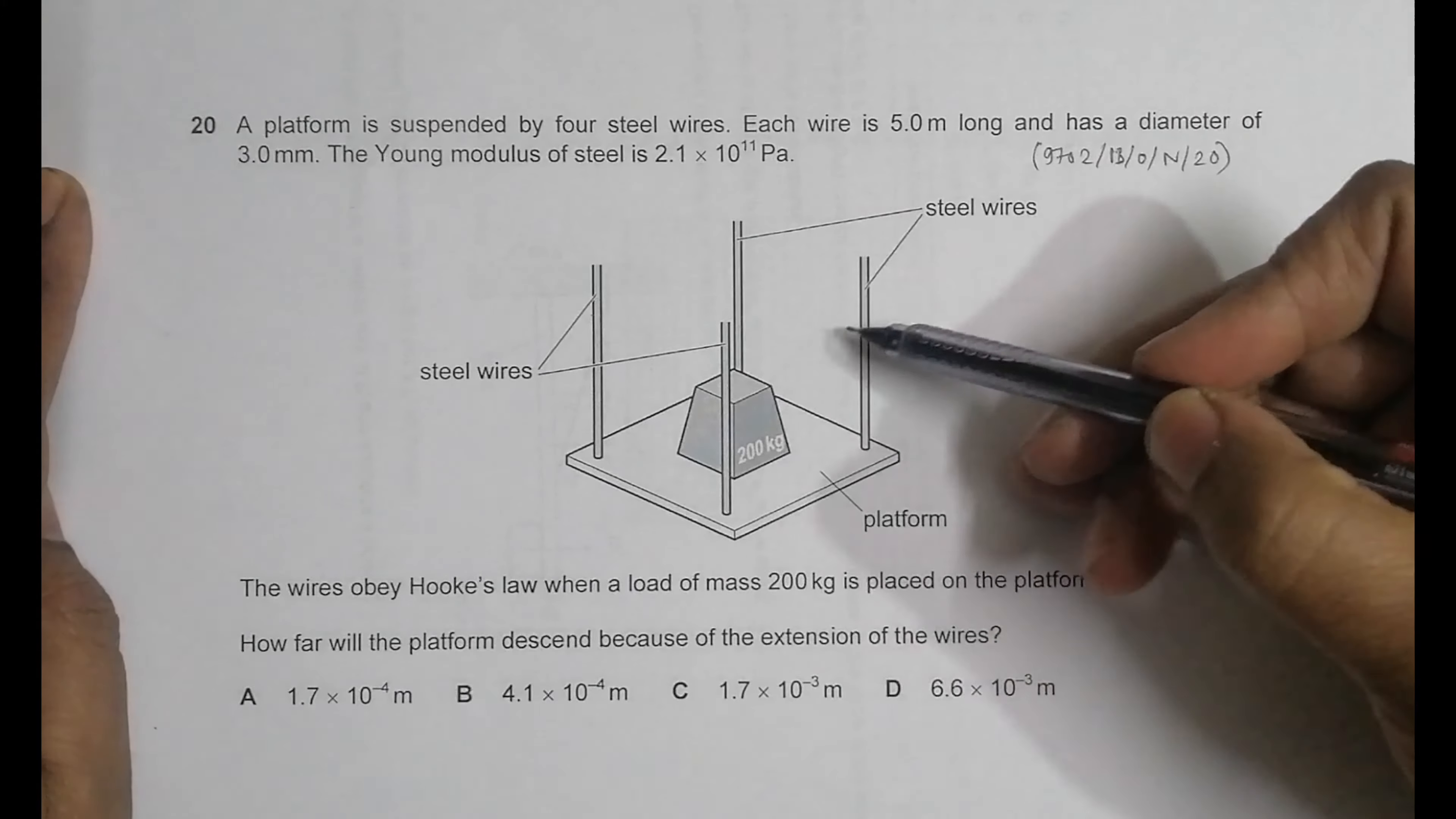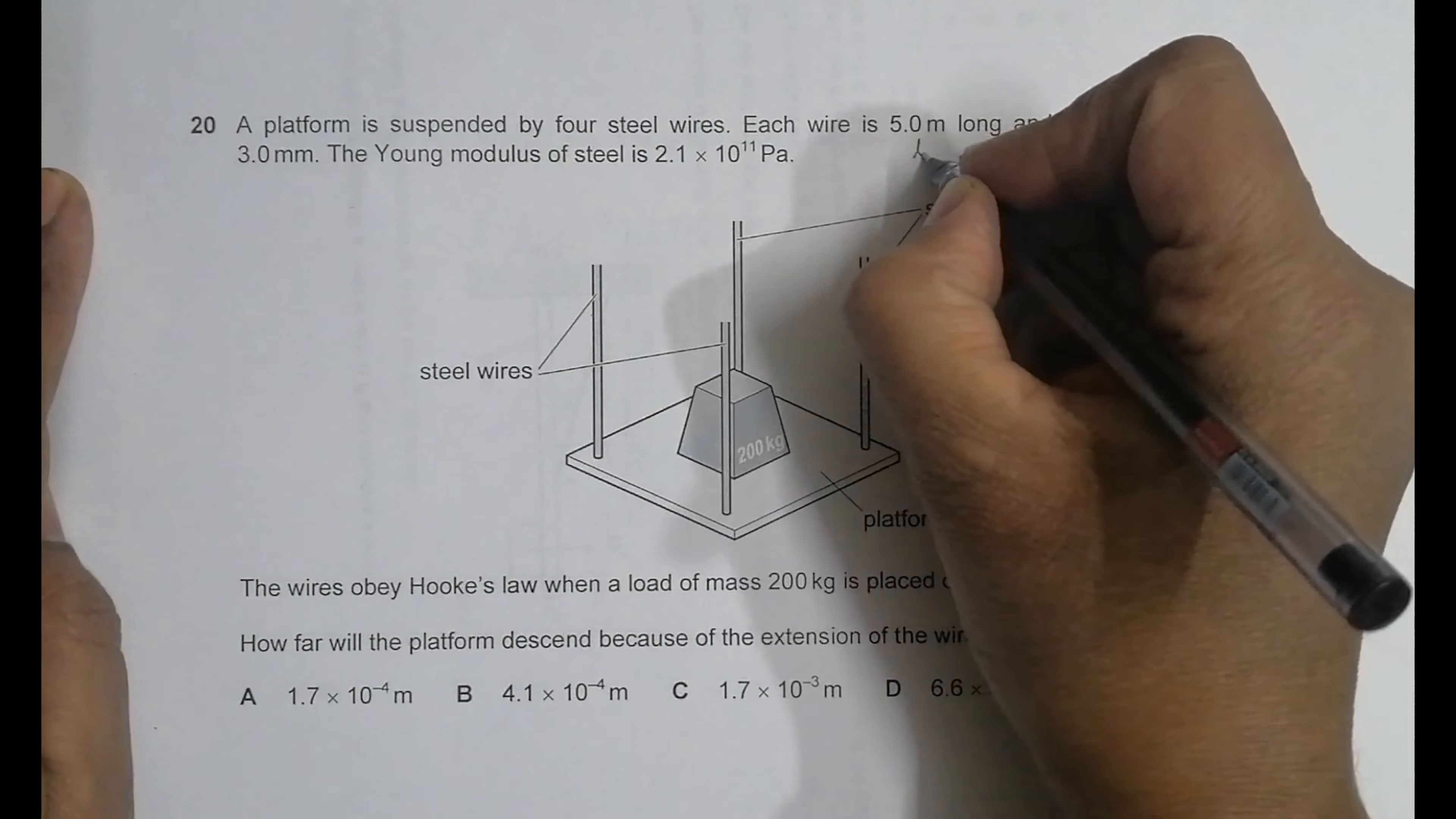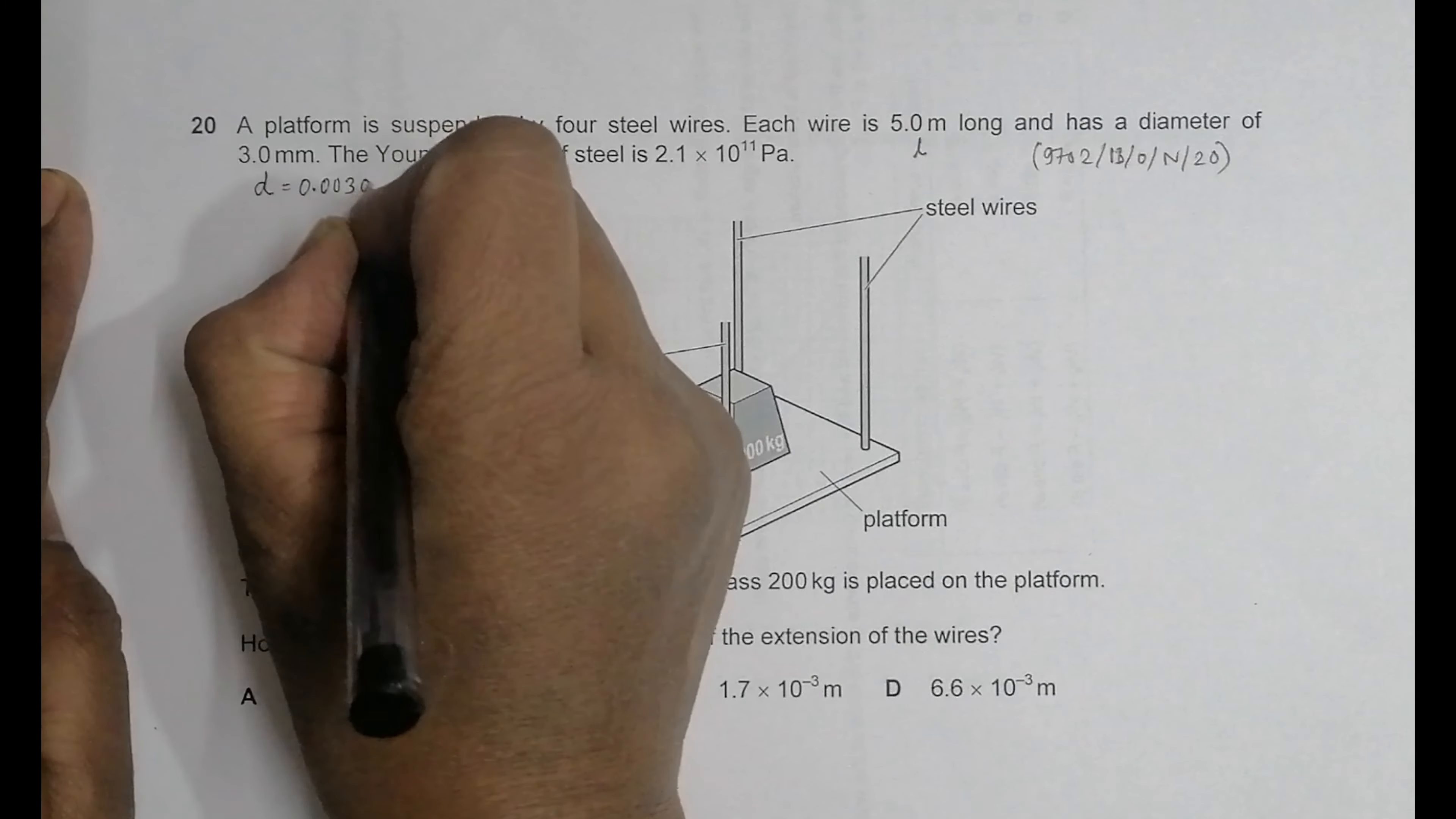A platform is suspended by four steel wires. Each wire is 5 meters long and has a diameter of 3 millimeters, so d equals 0.0030 meters.